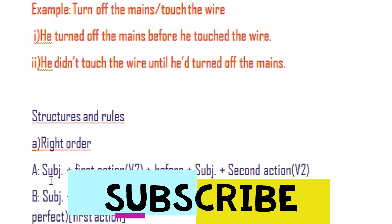If the order is right — like the above example — the person turned off the mains before tossing the wire, that is the right order. That is why: he turned off the mains before he tossed the wire. If the order is right, you have to use this structure: subject + first action (V2) + before + subject + second action (V2).